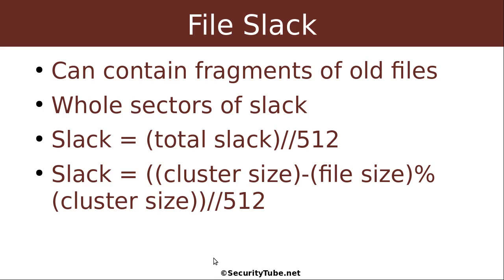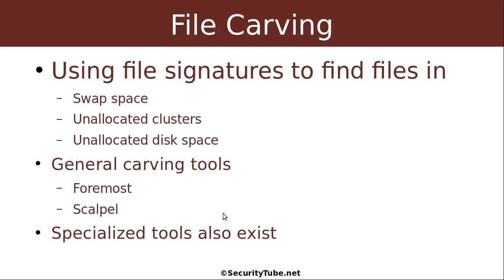File slack consists of those whole sectors. We care about file slack because it can contain fragments of old files. We said that we zero out the RAM slack, but we do not zero out the file slack. To calculate the file slack, take the total slack and do integer division by 512 — that gives you the file slack in sectors. Substituting in: (cluster size minus (file size modulus cluster size)) divided by 512 using integer division gives you the file slack.